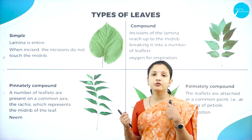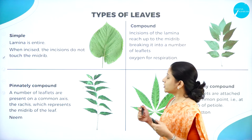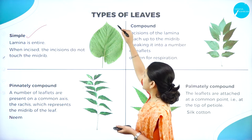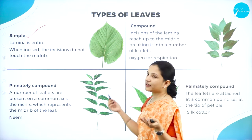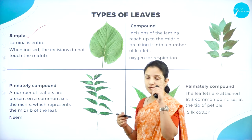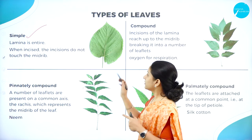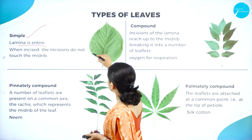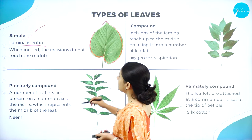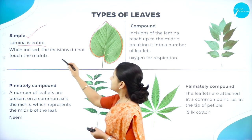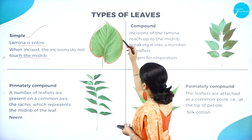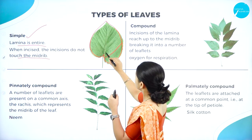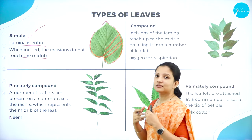Next, based on the type of leaves, we shall study the first type — simple leaf. In a simple leaf the lamina is entire. There is no multiple leaves present on one petiole. The leaf is just single. When it is incised, the incisions do not touch the midrib. These are simple leaves.